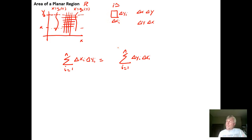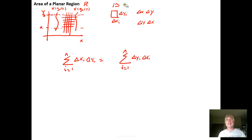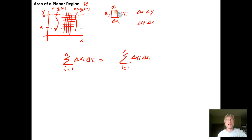Thinking back to Calculus 1, to get the exact area of the region we need to let the sizes of these squares become infinitely small — letting Delta X sub i and Delta Y sub i go to zero so that instead of Delta X and Delta Y we have DX and DY. We need infinitely many infinitely small squares. To formalize this, we define a norm for each square: the diagonal D of the largest square.